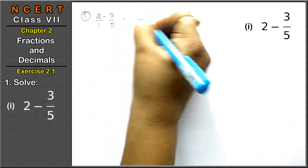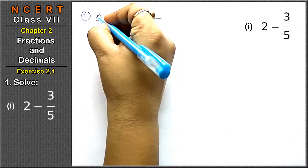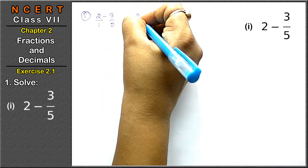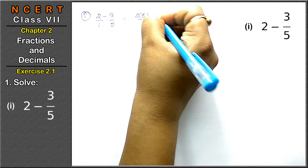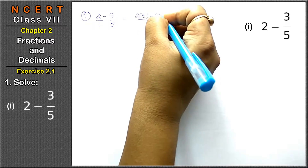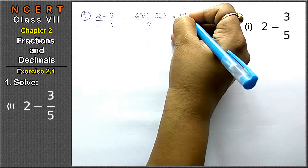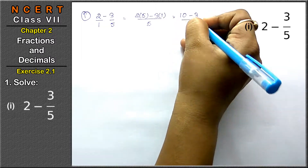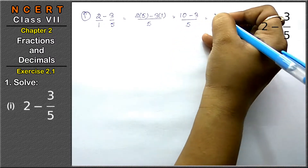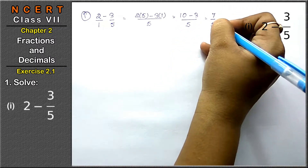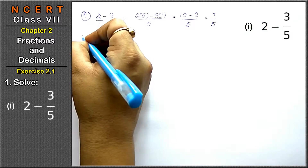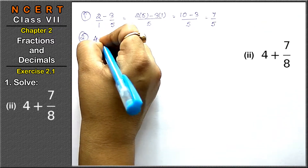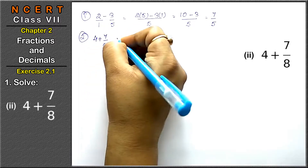5 is the LCM, that means 2 into 5 minus 3 into 1, upon 5, that is 10 minus 3 upon 5, which equals 7 upon 5 is the answer. Let's do the second part: 4 plus 7 upon 8.